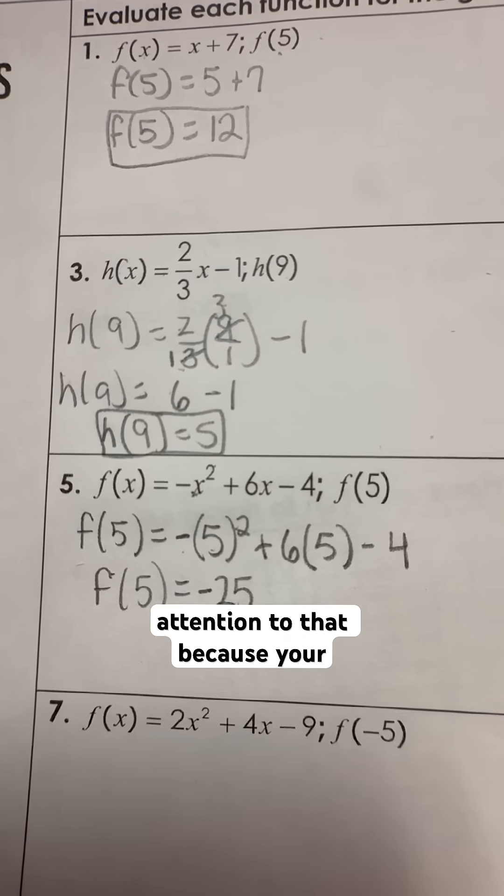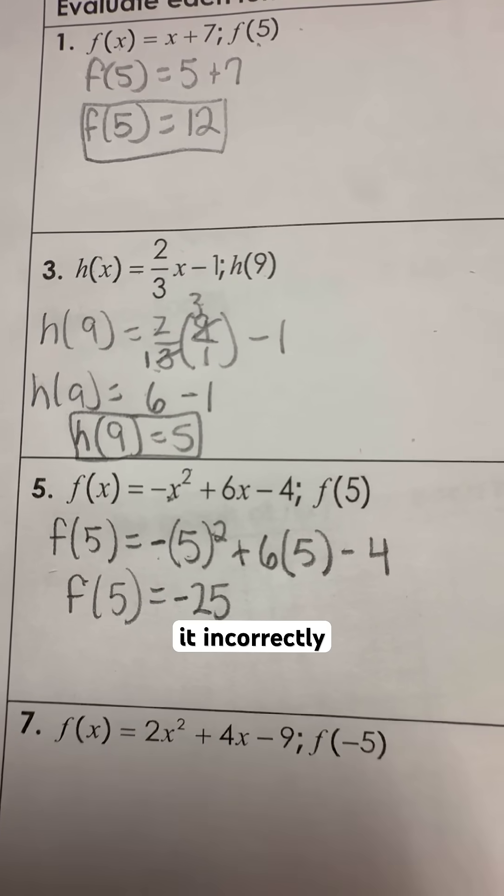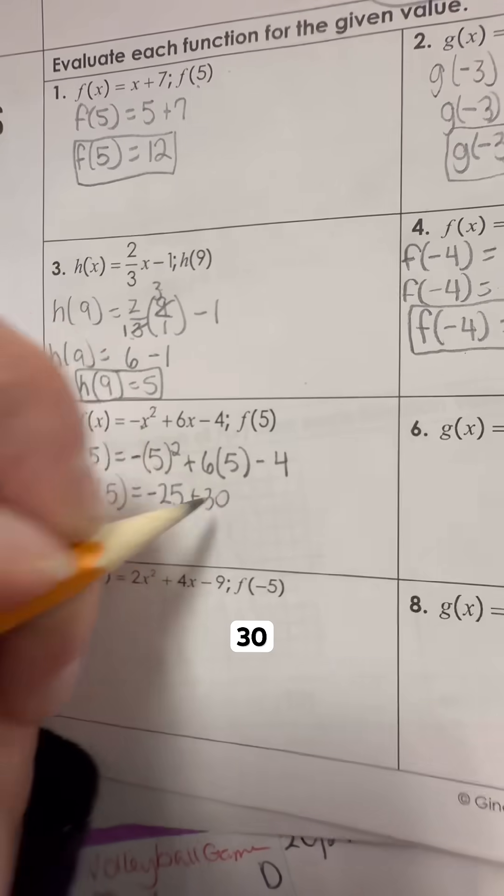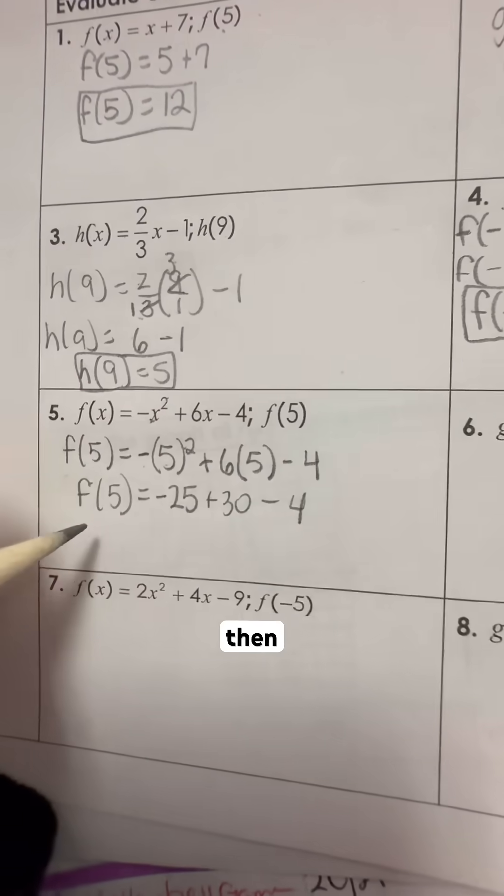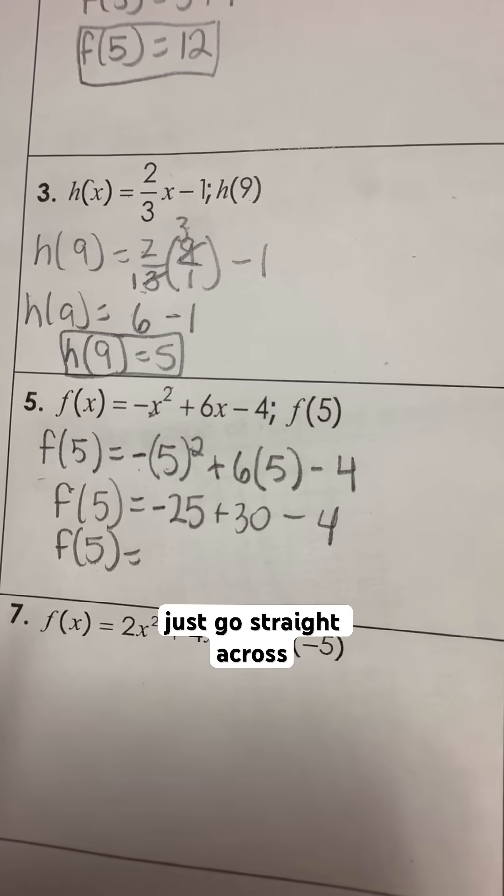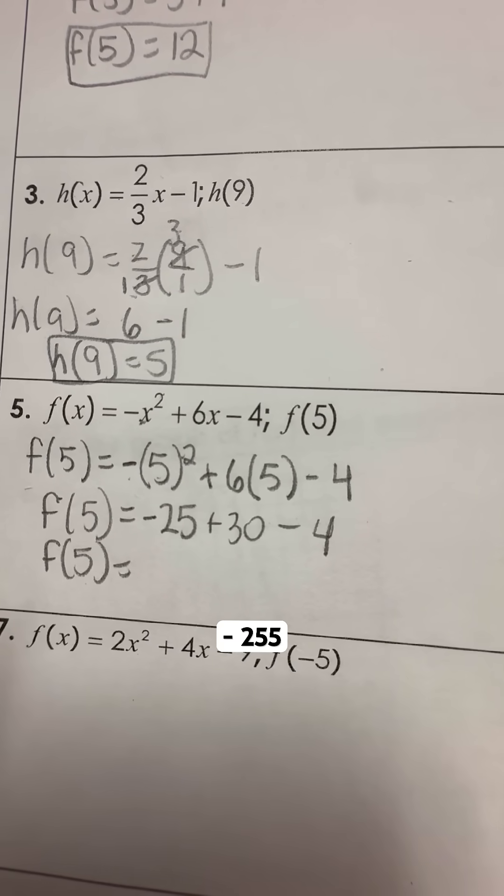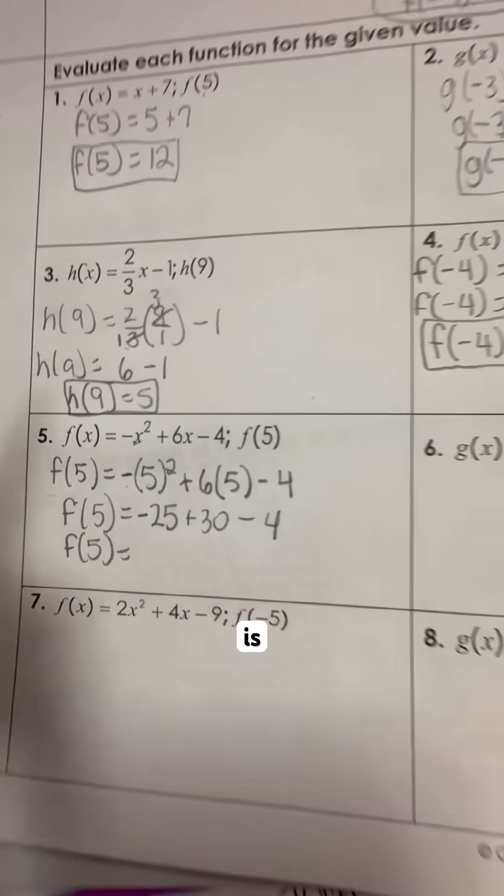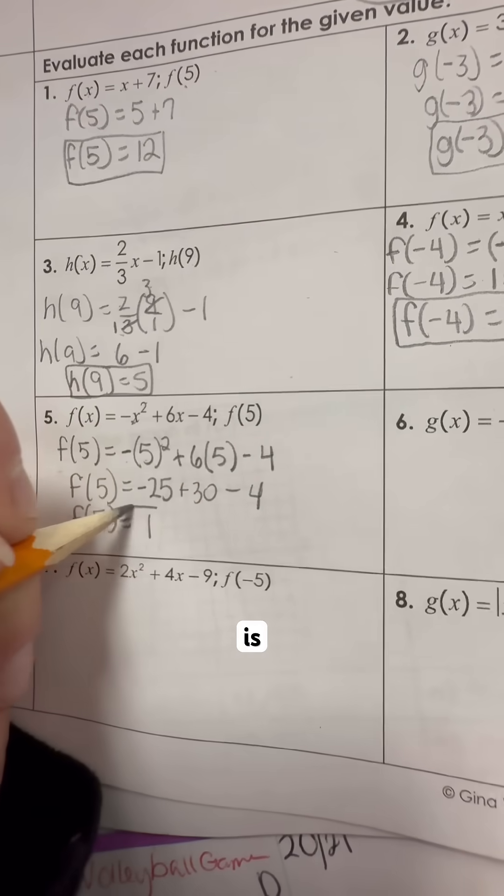Very different than the one that I did up there. So again, really pay close attention to that because your calculator will calculate it incorrectly. 6 times 5 is 30, and then we have that minus 4. Then when we simplify left to right, just go straight across that point. Negative 25 plus 30, which is going to be a 5.